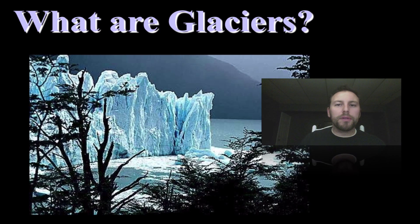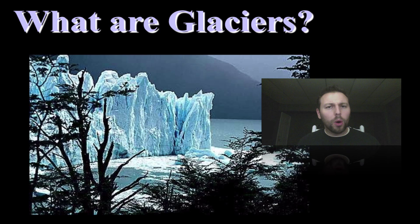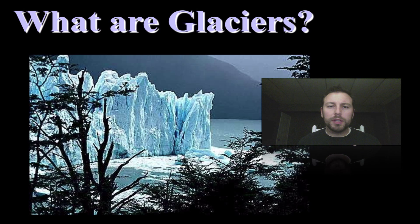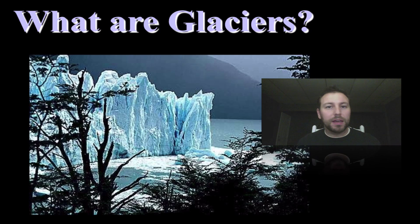Glaciers are nothing more than the accumulation of snow over a period of time that is basically pressed down on itself and formed into ice. It's actually very similar to what we see at this time of year, where we've had an accumulation of snow and that layer left is no longer flush with snow — it's actually very compact ice, or in some cases, compacted snow.